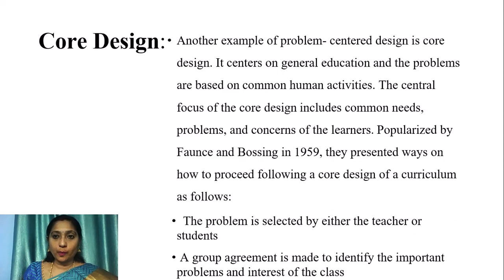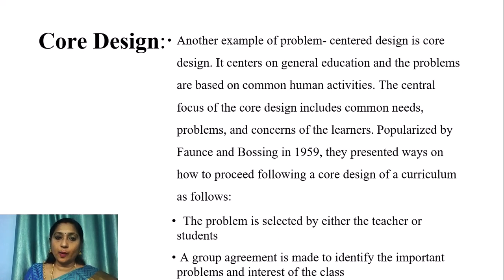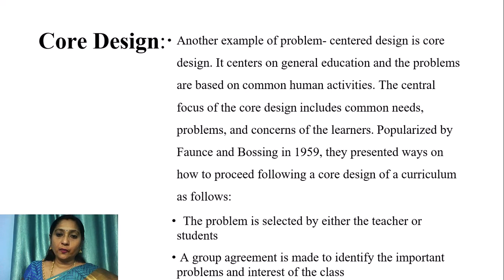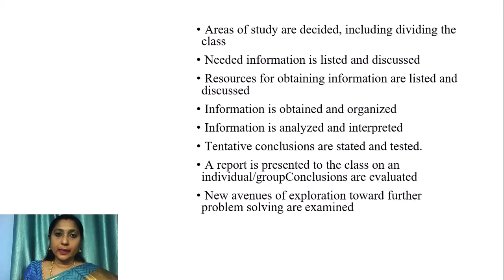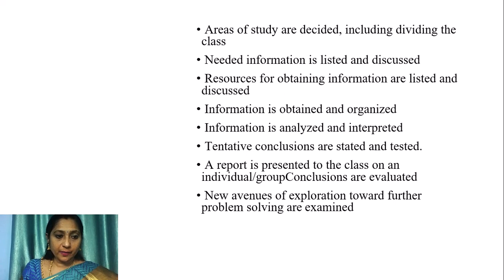Another example of problem-centered design is Core Design, which centers on general education where problems are based on common human activities. Popularized by Faunce and Bossing in 1959, they presented a process for core design: the problem is selected by teacher or student; a group agreement identifies important problems and interests; areas of study are decided; needed information is listed, discussed, obtained and organized; information is analyzed and interpreted; tentative conclusions are stated and tested; a report is presented; conclusions are evaluated; and new avenues of exploration are examined.